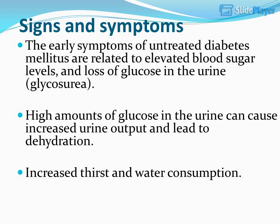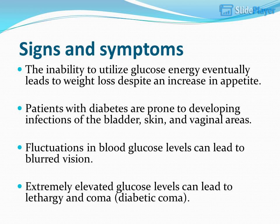Signs and symptoms: The early symptoms of untreated diabetes mellitus are related to elevated blood sugar levels and loss of glucose in the urine (glycosuria). High amounts of glucose in the urine cause increased urine output and lead to dehydration and increased thirst. The inability to utilize glucose for energy eventually leads to weight loss despite an increase in appetite. Patients are prone to infections of the bladder, skin, and vaginal areas. Fluctuations in blood glucose can lead to blurred vision, and extremely elevated levels can lead to lethargy and diabetic coma.